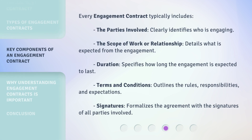Every engagement contract typically includes: the parties involved, which clearly identifies who is engaging; the scope of work or relationship, which details what is expected; duration, which specifies how long the engagement is expected to last; terms and conditions, which outlines the rules, responsibilities, and expectations; and signatures, which formalizes the agreement with the signatures of all parties involved.